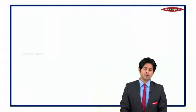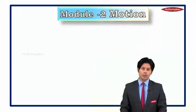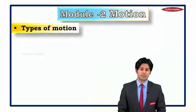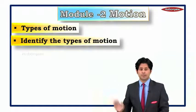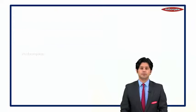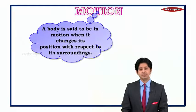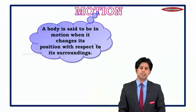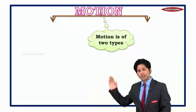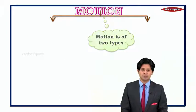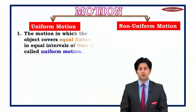Hello students, welcome back to the chapter Motion, Module 2. In this module we shall study the types of motion and an activity to identify the types of motion. Motion, as we have already discussed earlier, is when an object changes its place with respect to the surrounding. It is basically of two types: the first is uniform and the second is non-uniform.